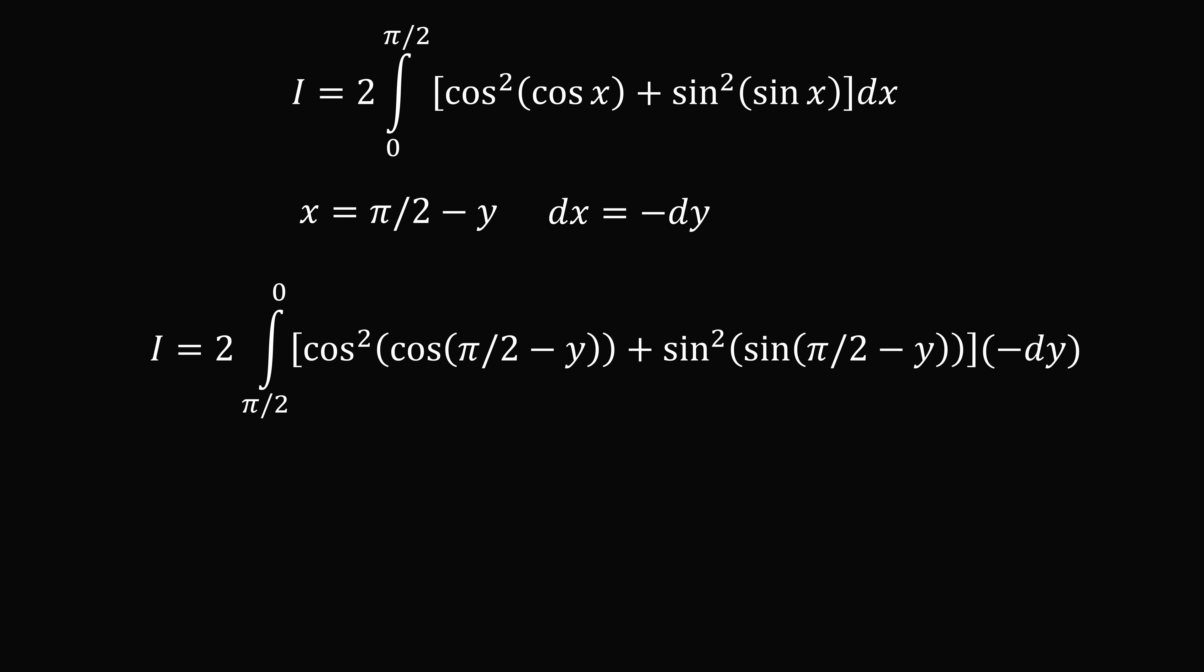So we get that i is equal to two times the integral from pi over two to zero. Then we substitute in x is equal to pi over two minus y. And finally, dx becomes negative dy.